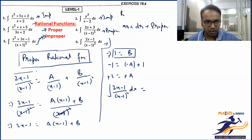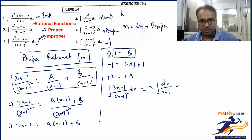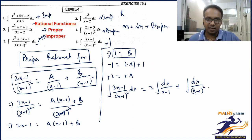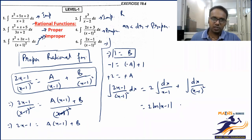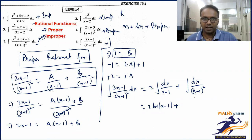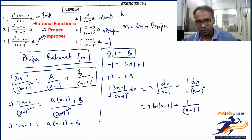Now that we have A=2 and B=1, the integral is 2∫dx/(x-1) + ∫dx/(x-1)². The first part gives 2 ln|x-1|. The second part: integral of (x-1)^(-2) gives (x-1)^(-2+1)/(-2+1) = (x-1)^(-1)/(-1), which is -1/(x-1). With B=1 and the minus sign, it becomes +1/(x-1). Final answer: 2 ln|x-1| + 1/(x-1) + C.